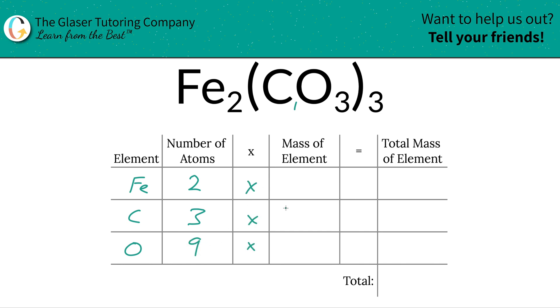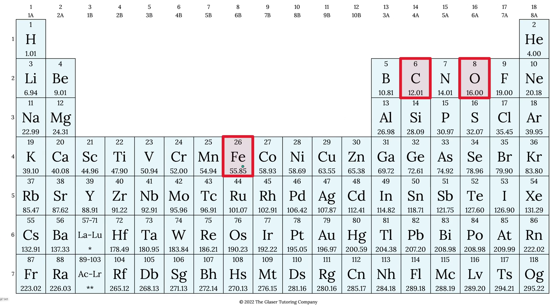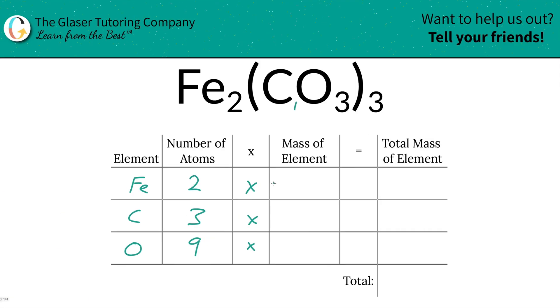Then we're going to take those number of atoms and multiply it by the mass of each particular element. That's where the periodic table comes into play. So this is the mass of iron, 55.85, carbon is 12.01, oxygen is 16. So let's write them in. 55.85 for iron, carbon is going to be 12.01, and oxygen was 16.